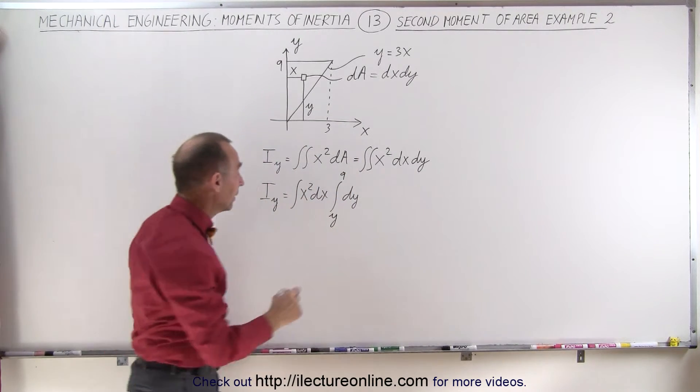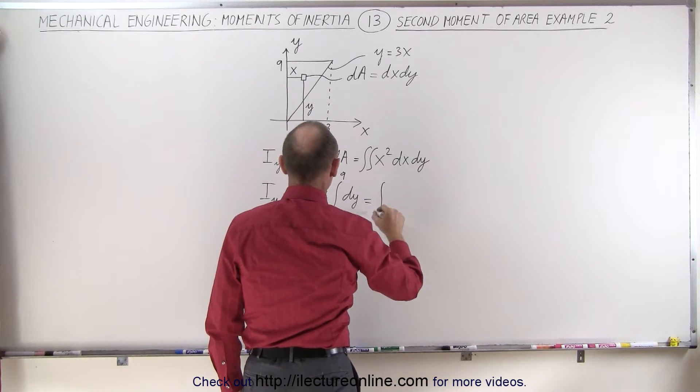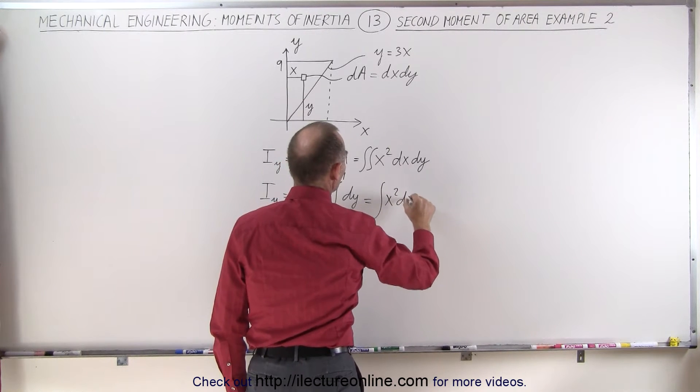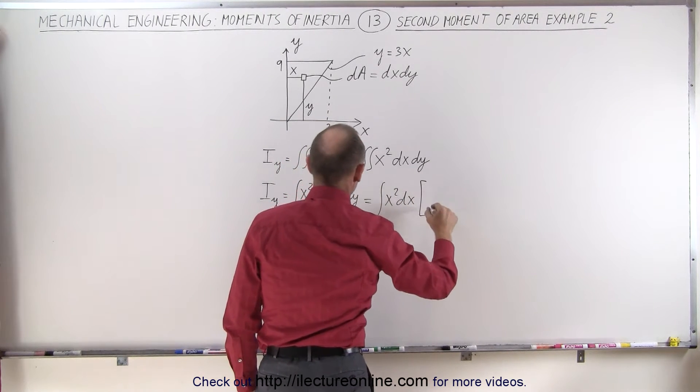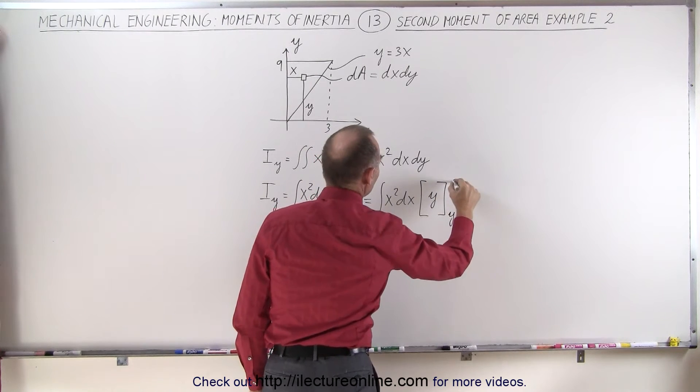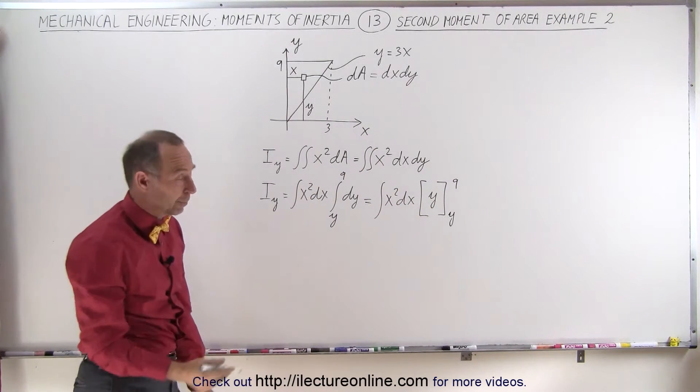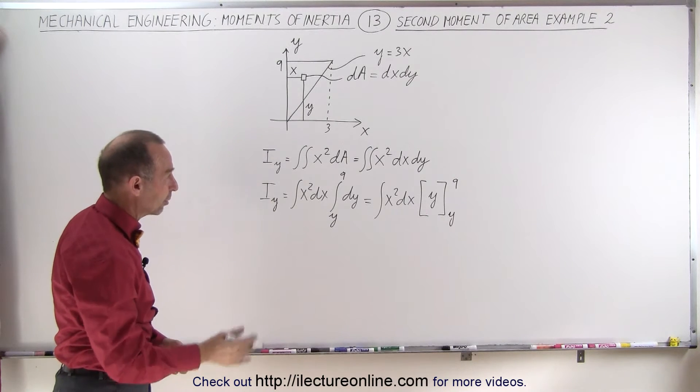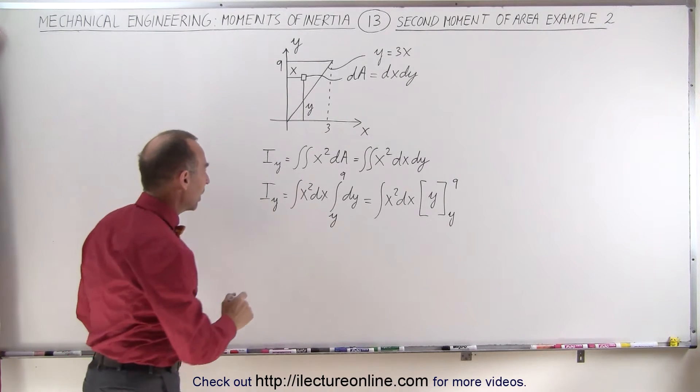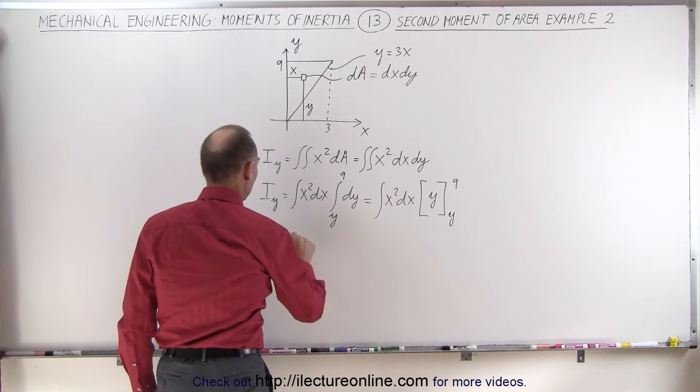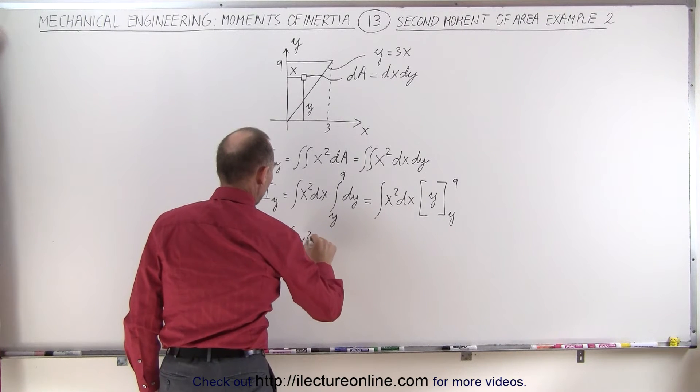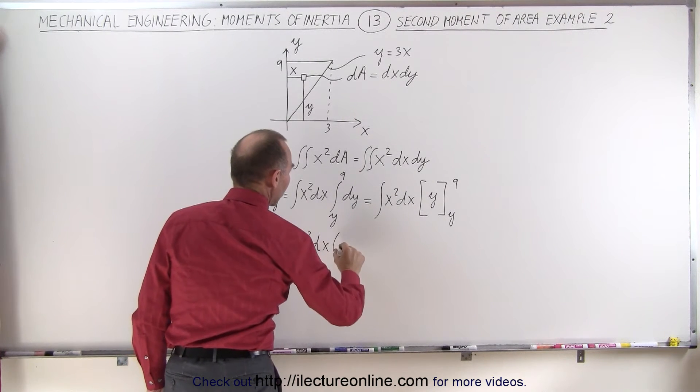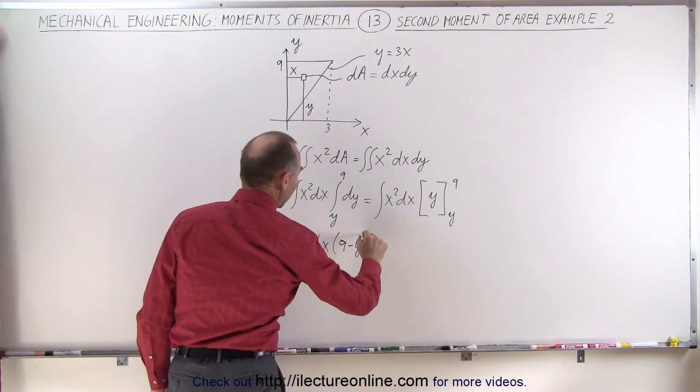Let's go ahead and integrate that. This is equal to the integral of x squared dx times y evaluated from y to 9. When you plug in the upper limit you get 9, subtract when you plug in the lower limit you get minus y, so this becomes equal to the integral of x squared dx times the quantity 9 minus y.